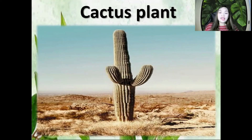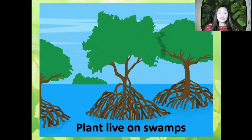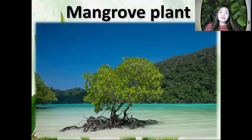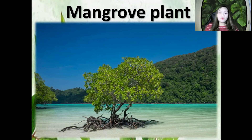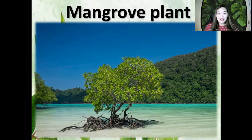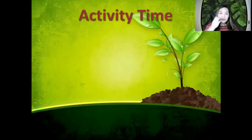The last habitat we'll talk about today is the plants that live on swamps. The plant that lives on swamps is the mangrove plant. Mangroves are living in the swamps. So before we end the video, let's do a little activity first. If you're ready, let's start.